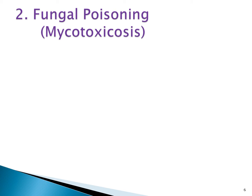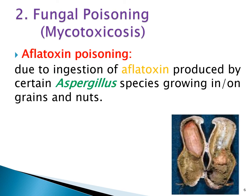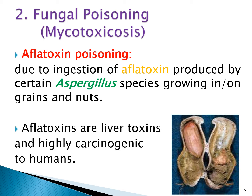Another example of fungal poisoning is aflatoxin poisoning, due to ingestion of aflatoxins produced by certain Aspergillus species growing in or on grains and nuts. If you examine a nut from the inside, you may find Aspergillus fungus producing aflatoxin, a mycotoxin. For humans, aflatoxins are liver toxins and are highly carcinogenic.